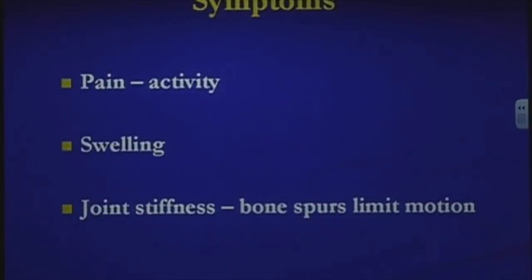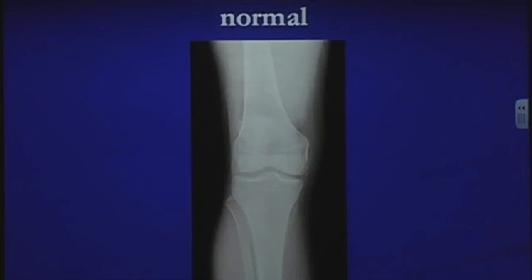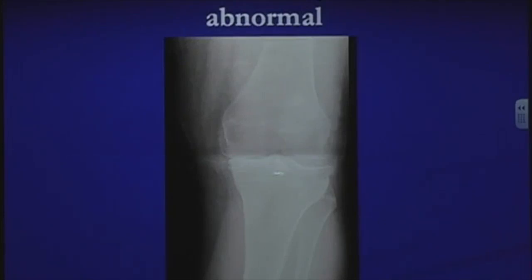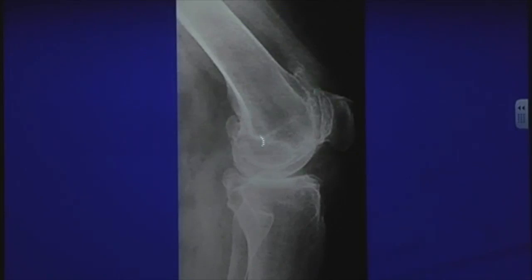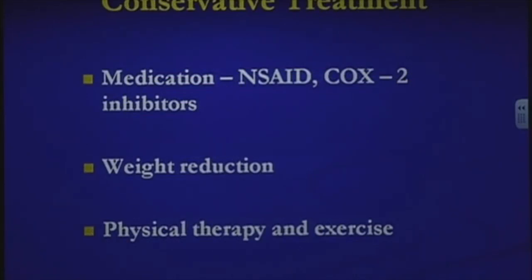Symptoms of arthritis include pain with weight-bearing activities, swelling, and limited motion caused by bone spurs. Here is an x-ray of a normal knee — my right knee. This is the thigh bone, here's the shin bone, and the gap between the bones is the articular cartilage not visible on x-ray. An arthritic knee shows complete collapse of the joint space. The side view shows large bone spurs that limit knee motion, and the kneecap view shows large osteophytes on each side.